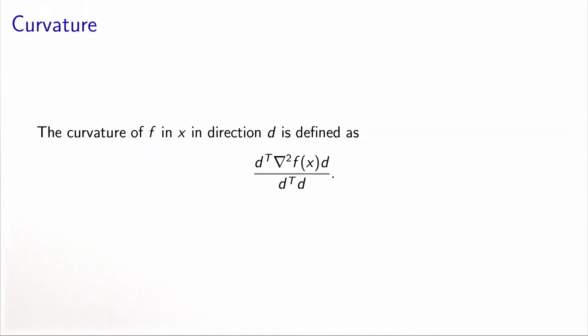So we will define the curvature of f at x in the direction d as this quantity, normalized. The derivatives provide useful information about the geometry of the function: the first derivative provides information about the slope, and the second derivative provides information about the curvature. We have seen also that the Hessian matrix is a symmetric matrix, and if it is positive semi-definite, it means that the function is convex.